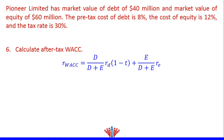After-tax WACC is: market value of debt divided by (market value of debt plus market value of equity) — which is the weight of debt — multiplied by cost of debt multiplied by (1 minus tax rate), plus market value of equity divided by (market value of debt plus market value of equity) — which is the weight of equity — multiplied by cost of equity.